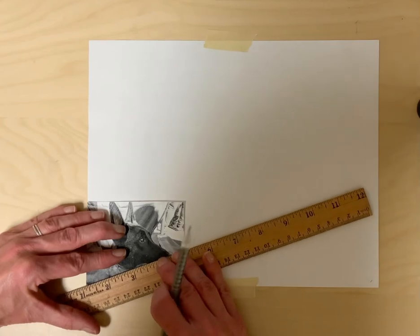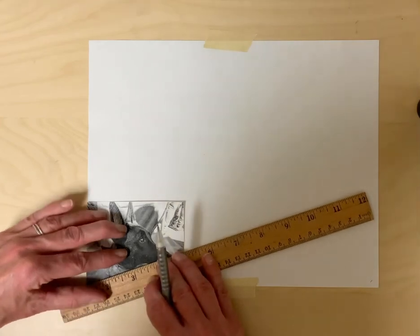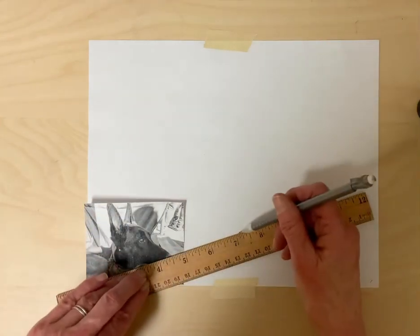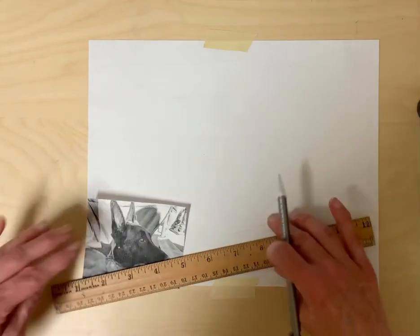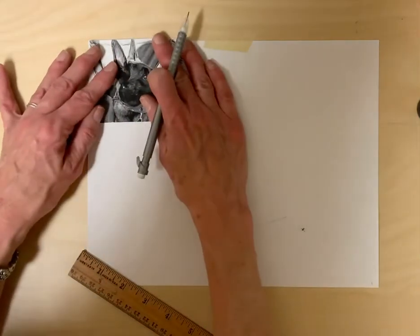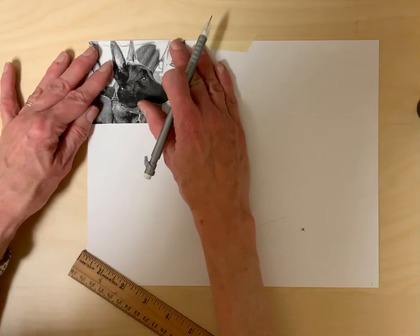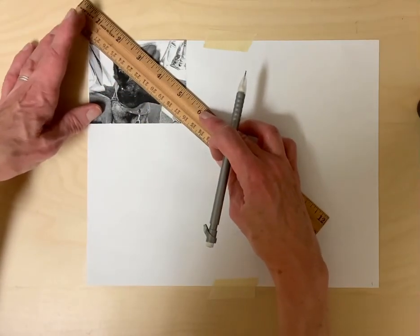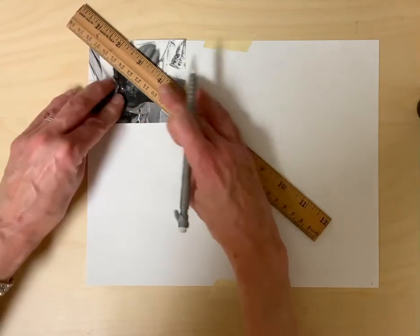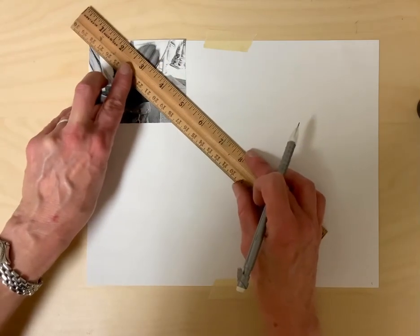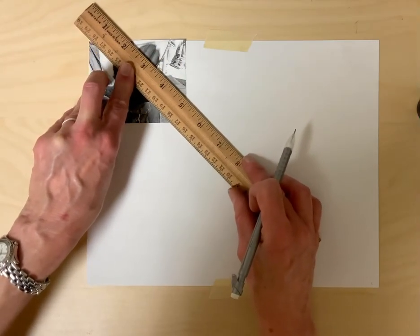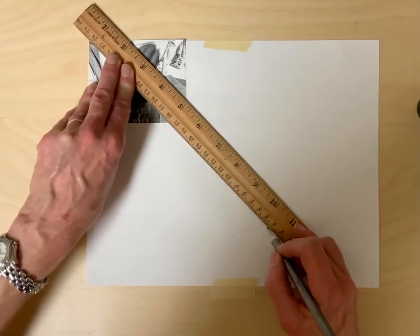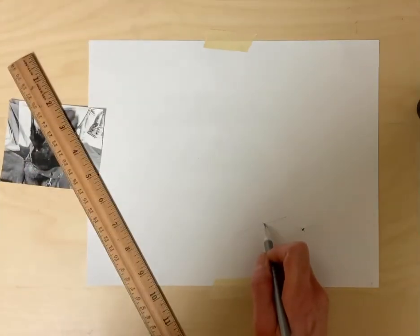Put it through the point. Right there. Make a line. Do the same thing up here. And find that point again. Make a line. And that's that.